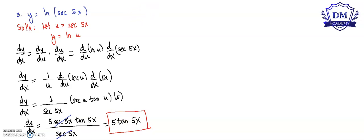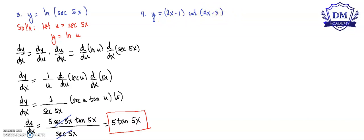Let's have the last problem. Our function y is equal to 2x minus 1 times cotangent of 4x minus 3. Our working solution here will use the product rule: v du plus u dv. We let u be equal to 2x minus 1 and v be cotangent of 4x minus 3.